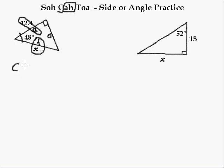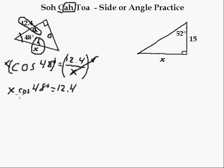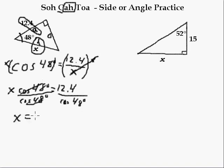Write out the equation, and I'm going to sub in as I write out the equation. So the cos of the angle, which is the cos of 48 degrees, is equal to A over H, which in this case is 12.4 over X. X is on the bottom, so how do I get X out from the bottom? Well, I multiply both sides by X. So I get X cos 48 degrees, and the X and X cancel out. Now X isn't on the bottom anymore. Now I divide by the cos of 48 degrees, so this ends up over the cos of 48 degrees, and these cancel out. I end up that X is equal to 12.4 over cos 48 degrees.